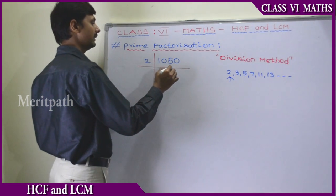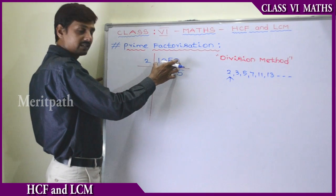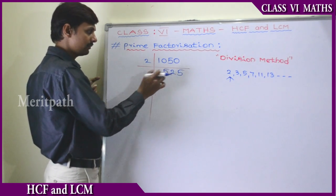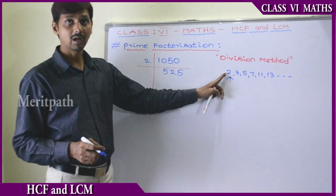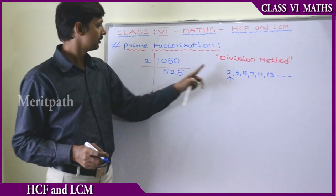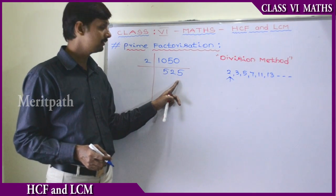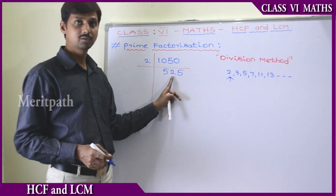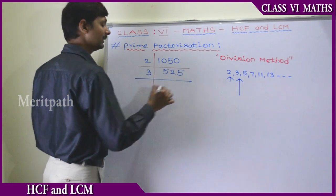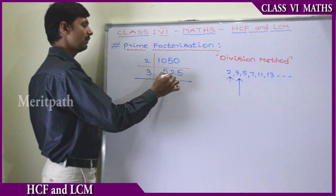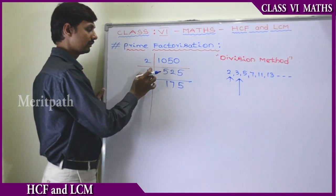1050 ÷ 2 = 525. Now we check if 525 is divisible by 2. Since 525 is an odd number, it is not divisible by 2. So we check divisibility by 3. The sum of digits of 525 is 5+2+5 = 12, and 12 is divisible by 3. So we take 3: 525 ÷ 3 = 175. Now check 175 by 3: sum of digits 7+5+1 = 13, which is not divisible by 3. So we move to the next prime number 5.